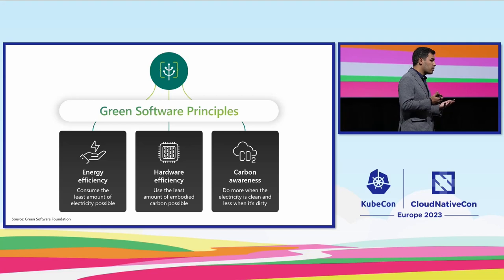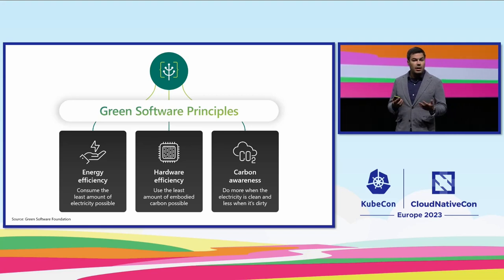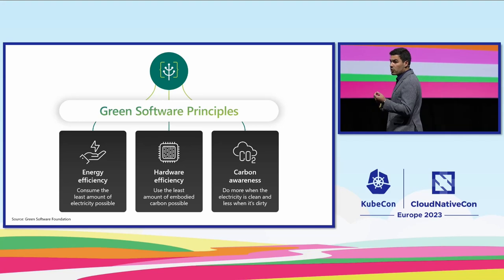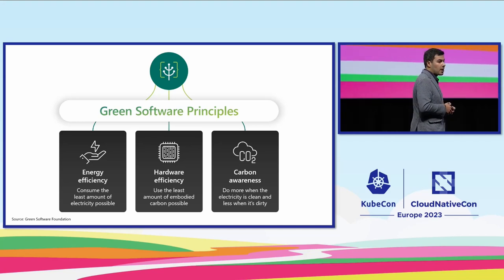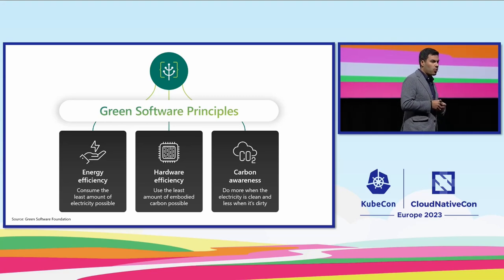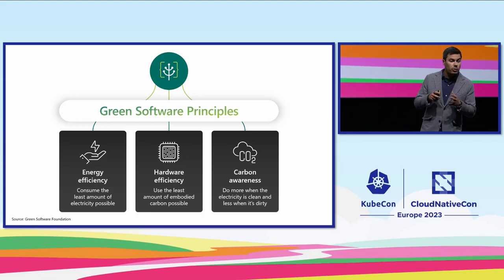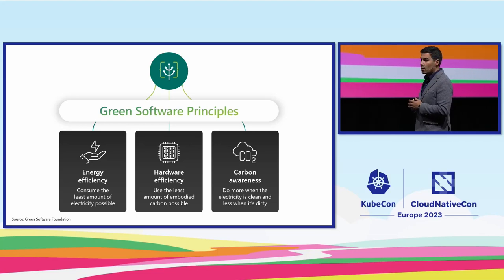Number two, hardware efficiency. Everything that we do or use today needs carbon to be produced and disposed of. Using less devices and less components in our solutions will ensure that that embodied carbon is less. And three, carbon awareness, which is all about the distinction between clean energy and dirty energy, and it's all about knowing, based on that, when to do more or when to do less.